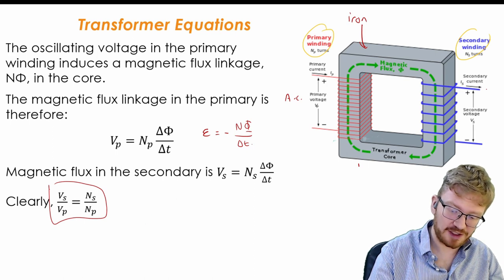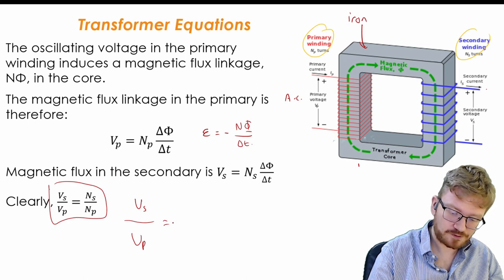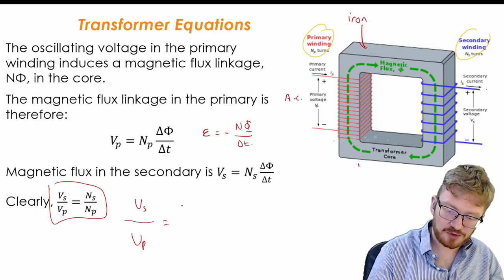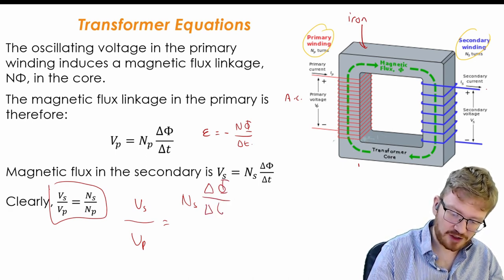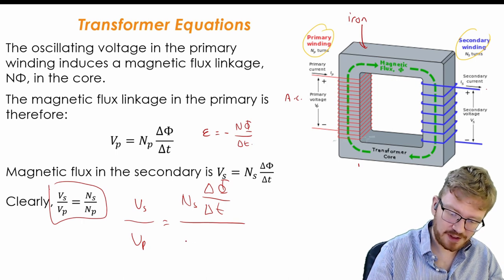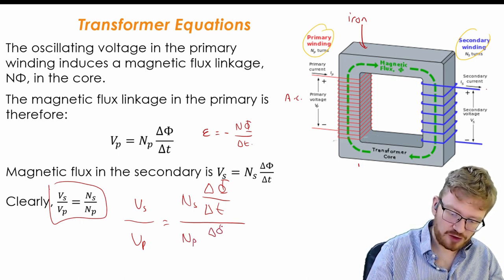If I just divide one by the other, so I know that some are asking for VS over VP, and so VS is number of coils on the secondary times magnetic flux over T, and that is equal to magnetic flux linkage through the primary.